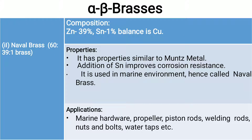Naval brass is a 60-39-1 brass with 39% zinc, 1% tin, and balance copper. It is very similar to Muntz metal, with the addition of 1% tin, which improves corrosion resistance. It is generally used in marine environments, hence the name naval brass. Applications include marine hardware, propeller piston rods, welding rods, nuts and bolts, and water taps.